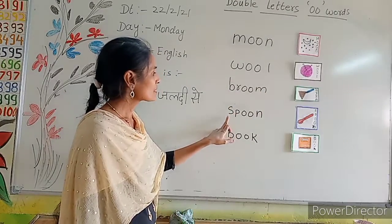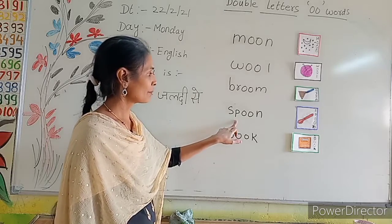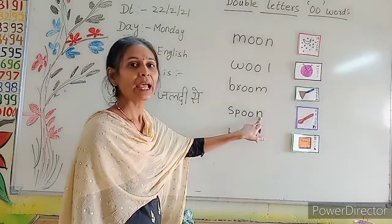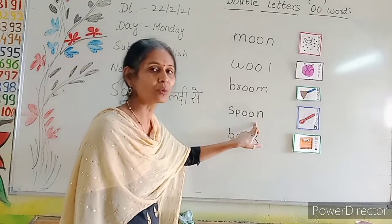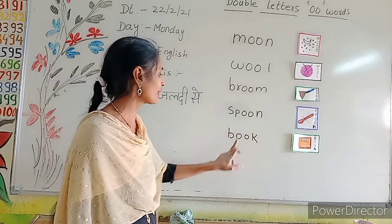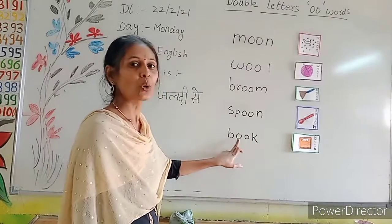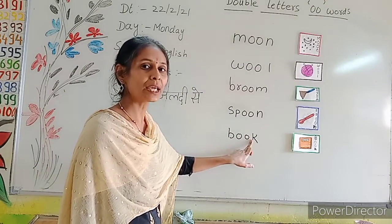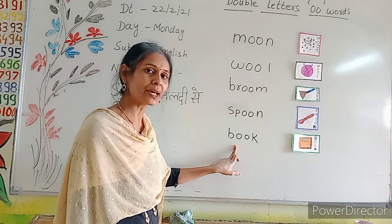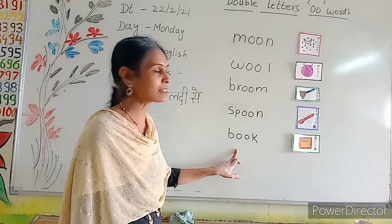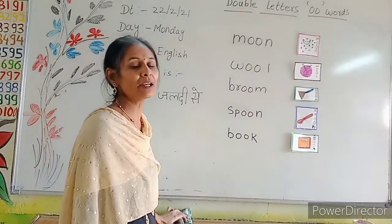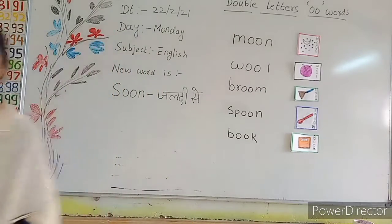Then spoon — S-P-O-O-N. Spoon. Okay? Isme kaunsa sound aata hai? Oo ka sound aata hai. Then B-O-O-K. Book. Book mein kaunsa sound aata hai? Oo ka sound aata hai. So you have to write all these words in your notebook. Okay? Oo ka sound aata hai.